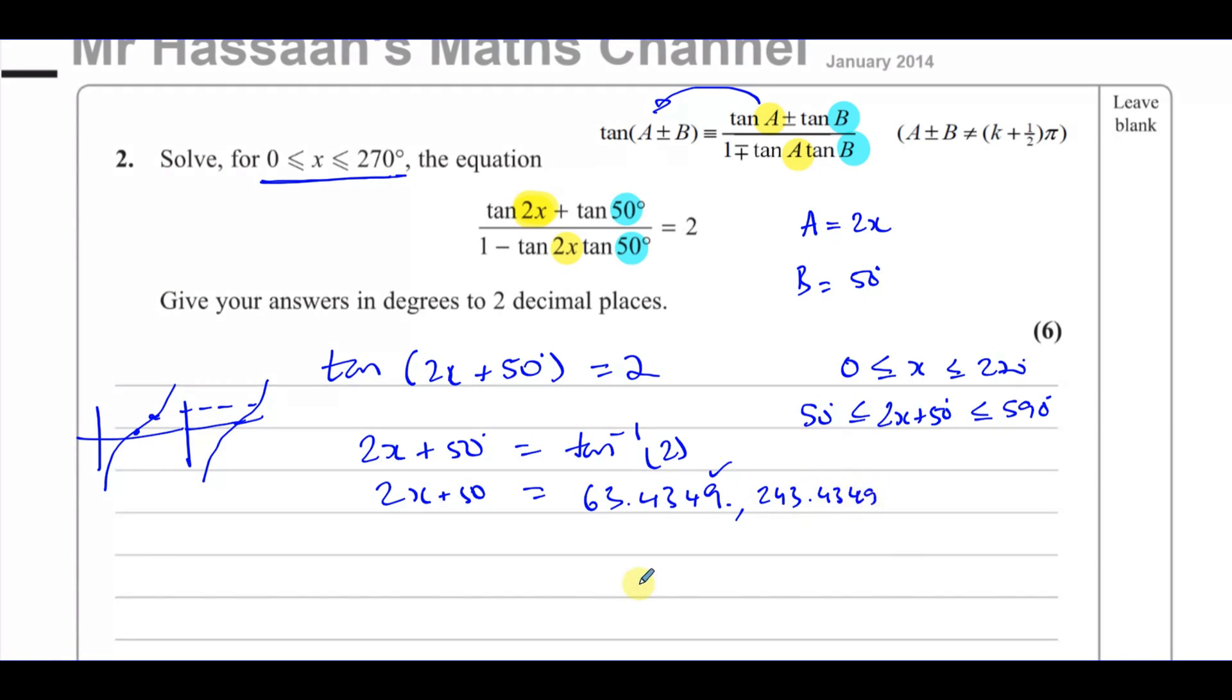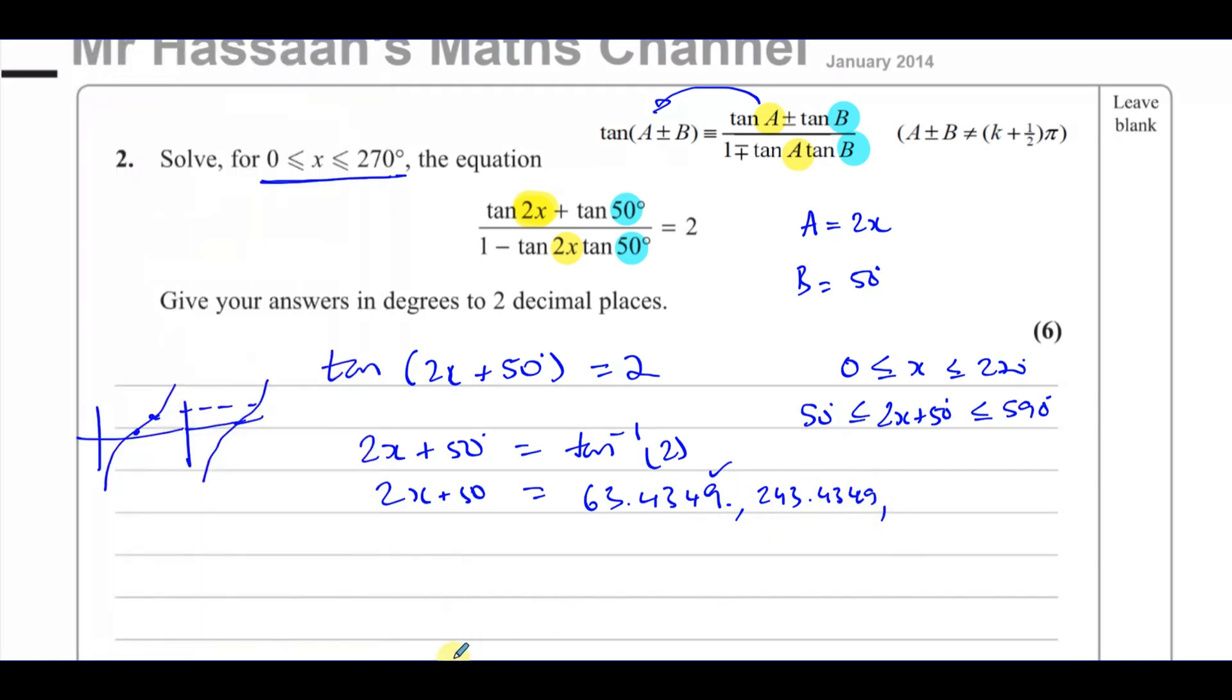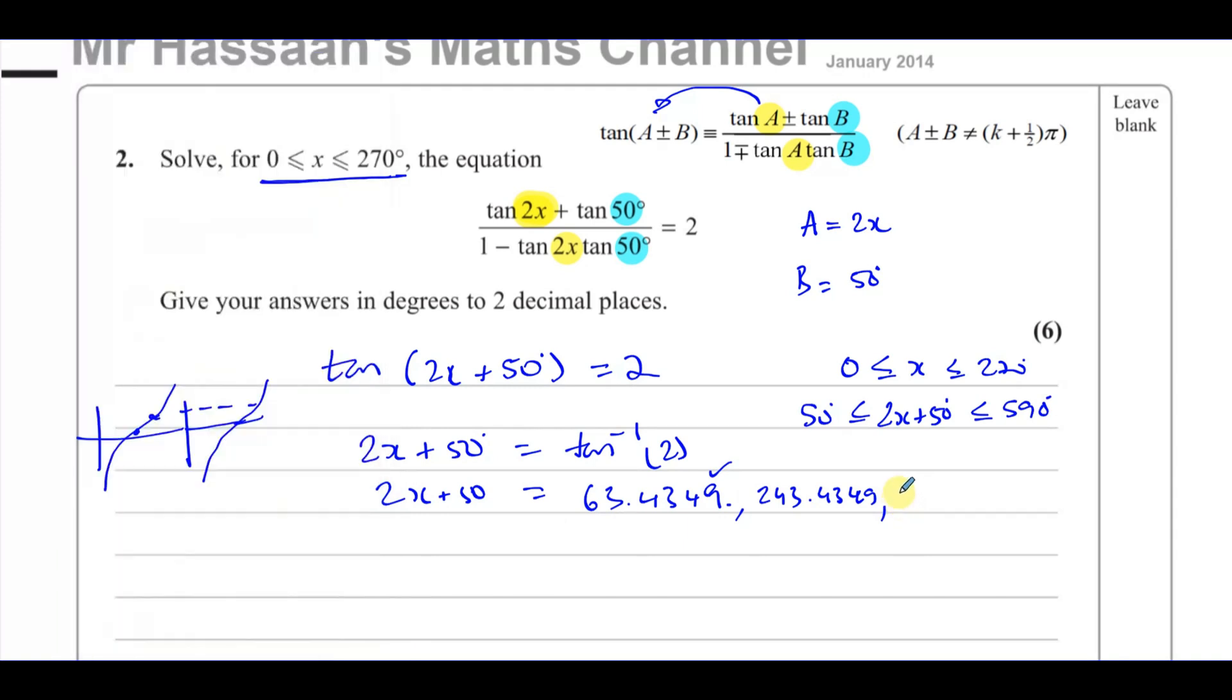And that gives us 243.4349. And then we add another 180 to this. Keep adding 180s. That gives us 423.4349.